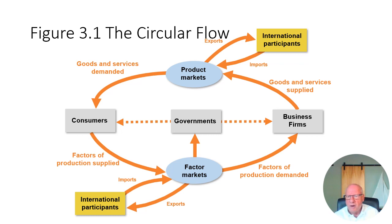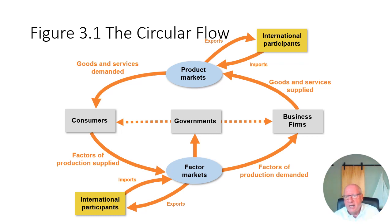The circular flow works with activities flowing from business firms to consumers, and from consumers back to business firms, and also from international markets doing the exact same thing — both selling into the United States and purchasing from the United States, in both the final goods markets and the factor markets, to facilitate business. This ends the 3.1 section; we'll be moving on to 3.2.